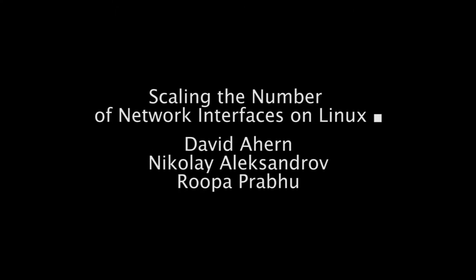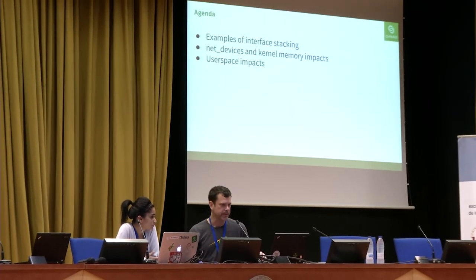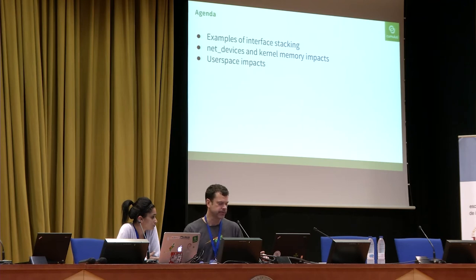We're going to talk about some work that Nikolai, Rupa, and myself did. We're looking at what happens as you start making larger and larger deployments on a Linux operating system. We'll start off with some examples of interface stacking that causes this explosion of network interfaces, look at some kernel-side memory impacts, some suggestions on what we could do to lower that impact, and then Rupa will talk about some user space impacts.